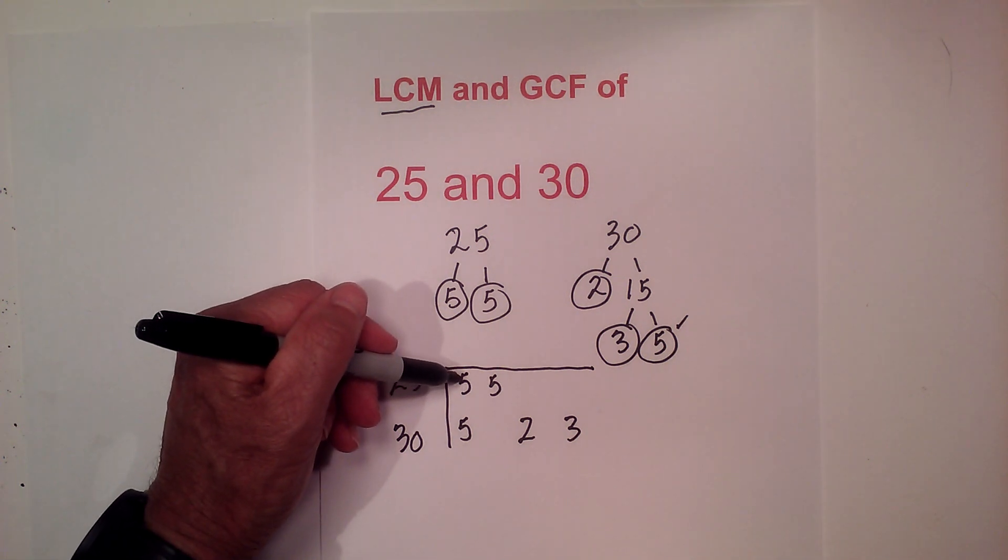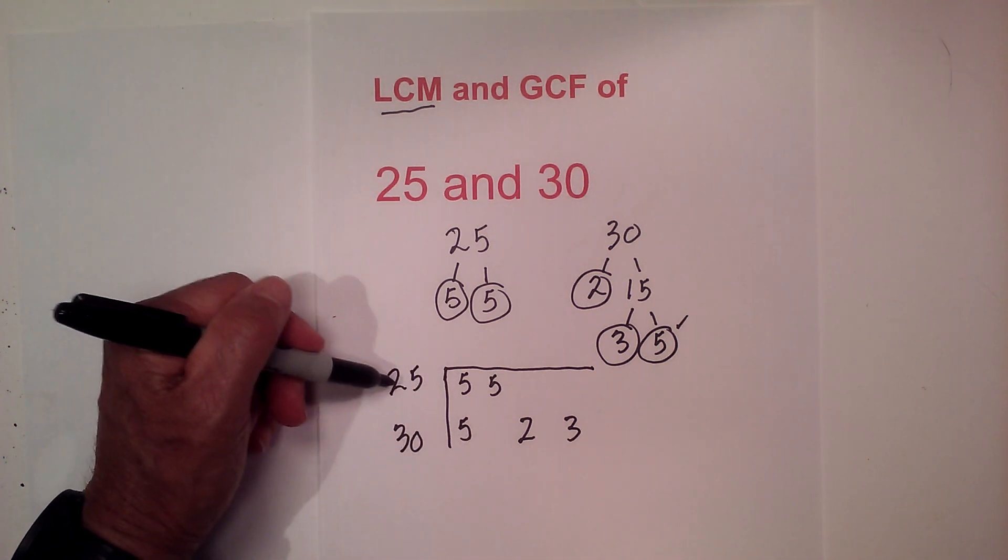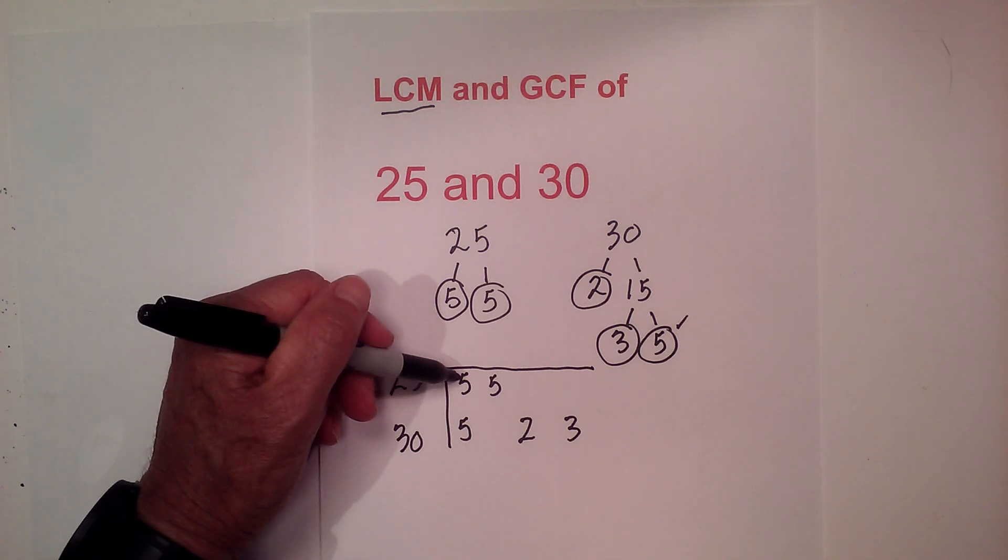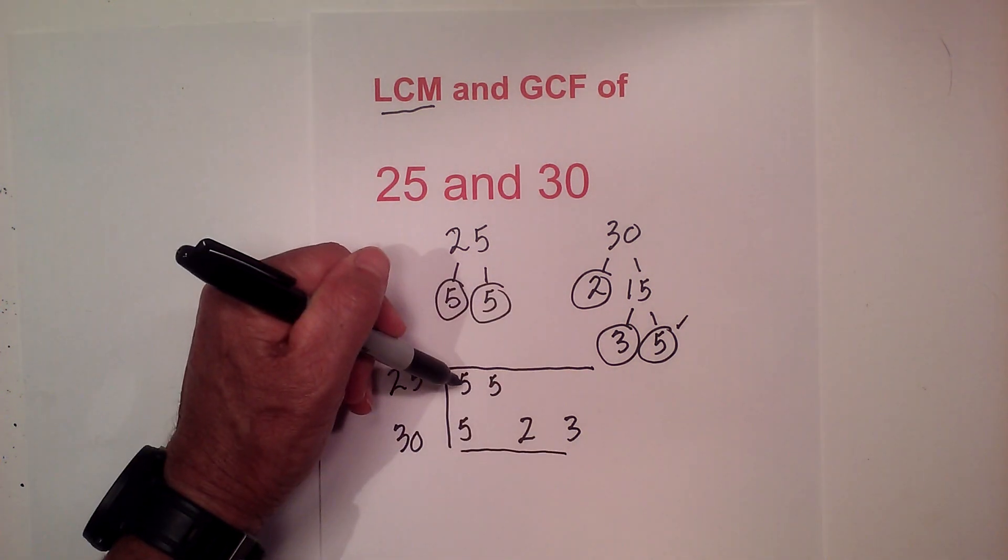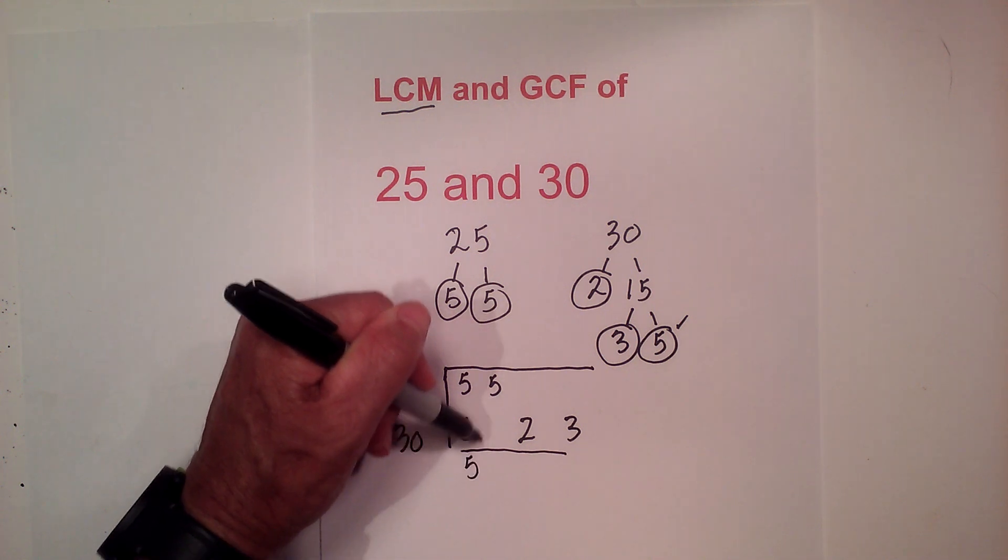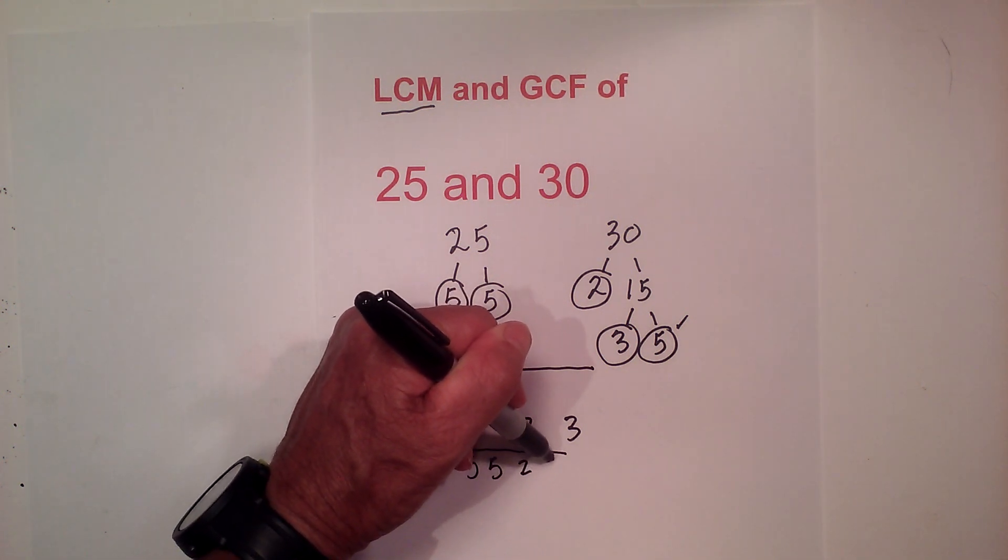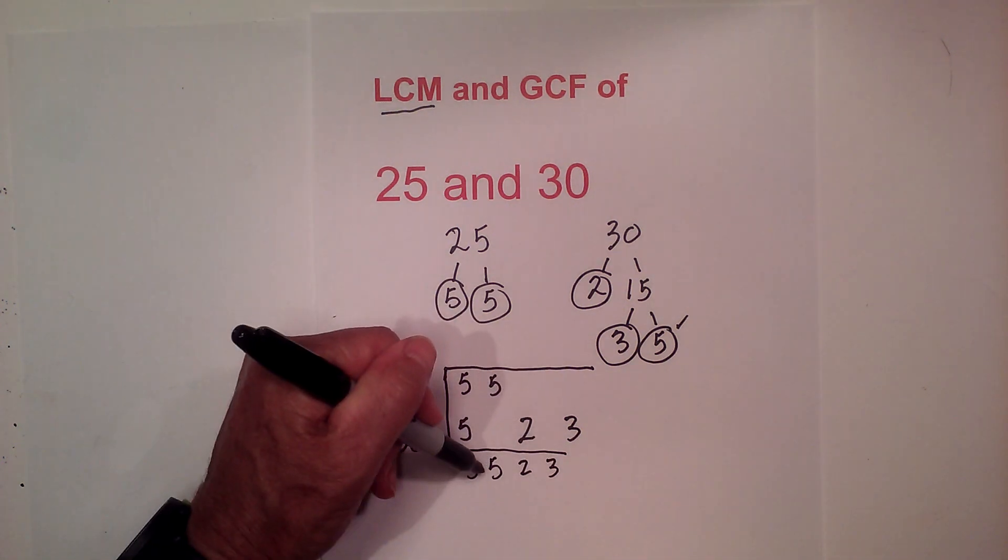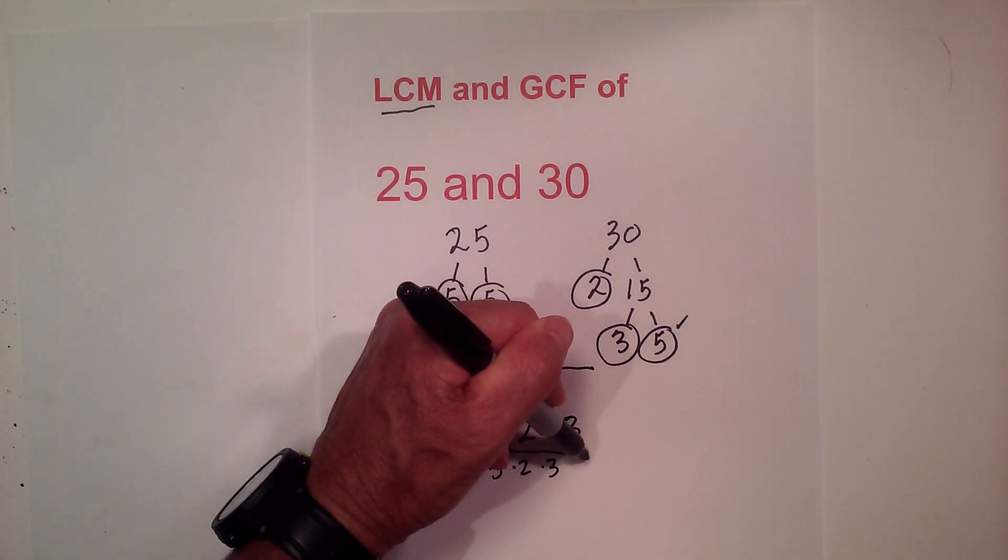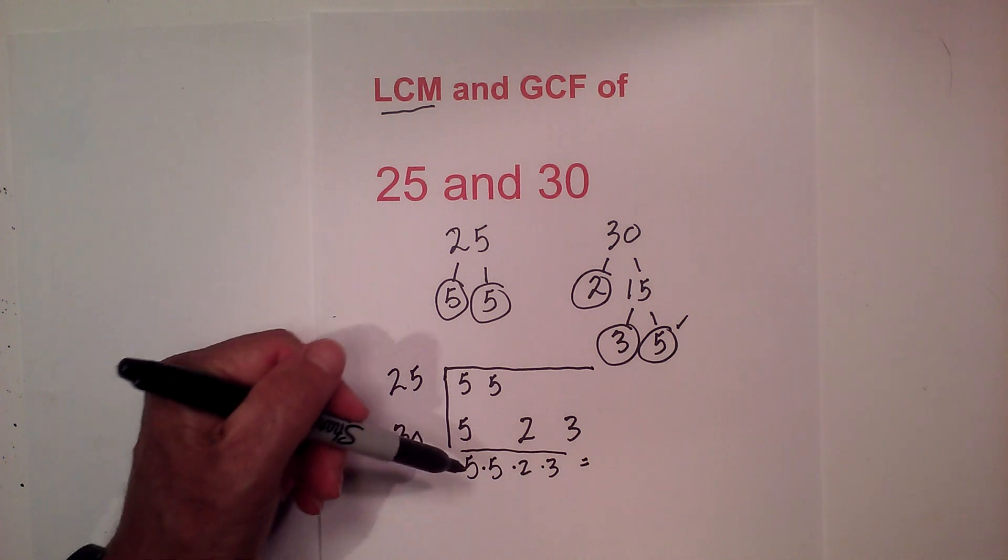If I have a vertical pair, since we have two numbers, 25 and 30, I only use one number. So I have a vertical pair, so I'll bring down the 5, bring down the other 5, and then the 2 and the 3. Now I just multiply each of these numbers together and it will give me the LCM.